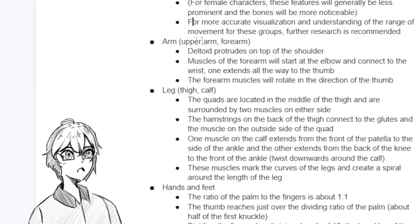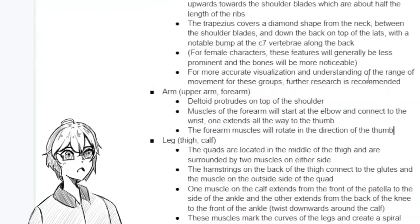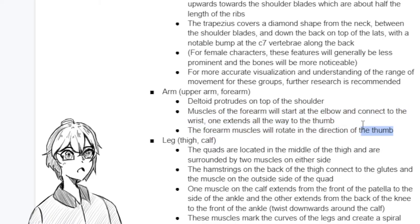Next is the arm, including the upper arm and forearm. We have the deltoid, which protrudes on top of the shoulder — the muscle that sticks out on the side. Generally these aren't drawn noticeably unless the character is extremely built. Next, the muscles of the forearm start at the elbow and connect to the wrist, with one extending all the way to the thumb. These two muscles rotate in the direction of the thumb. This is important if your character is holding something using a lot of forearm muscle — those muscles might bulge or show, especially for more muscular characters.